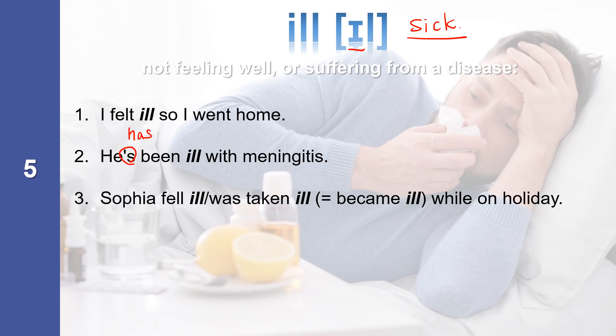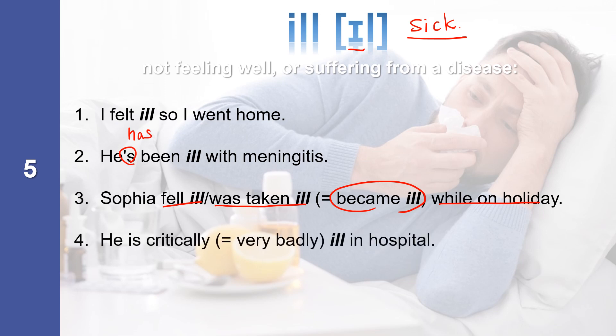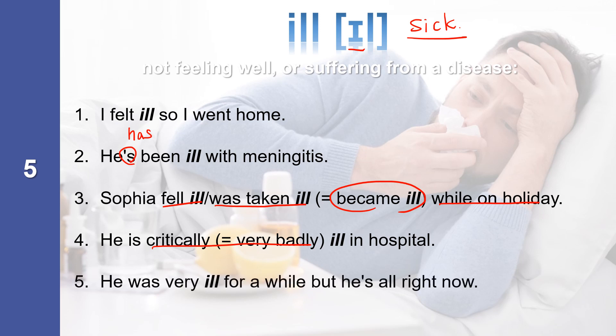Sophia was taken ill while on holiday, meaning Sophia became ill while on holiday. He is critically ill in hospital. Critical means very serious, so very badly ill in hospital. He was very ill for a while, but he is alright now.